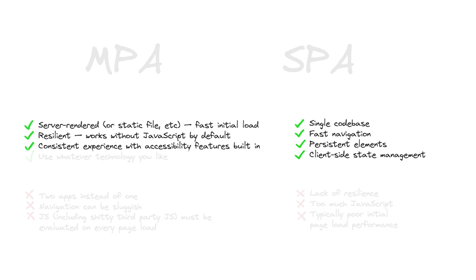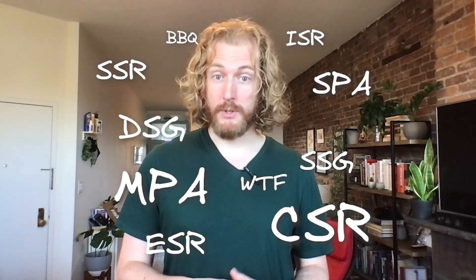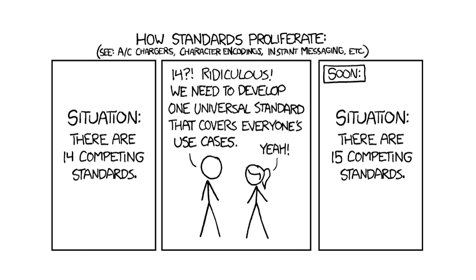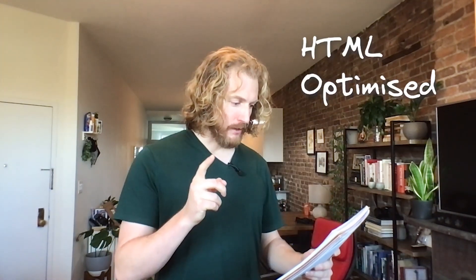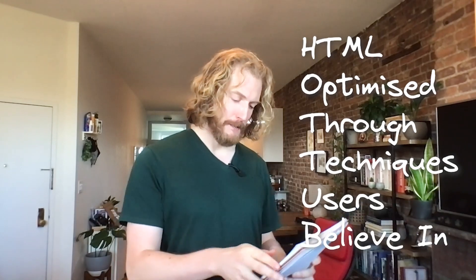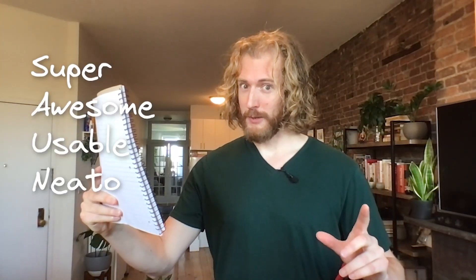So we can build apps that combine the best aspects of traditionalism and modernism — fast initial load, accessibility, resilience, instant navigation, a cohesive codebase, and capabilities that used to be out of reach. What should we call them? Well, we already have a sea of acronyms, so at the risk of being all XKCD 927, maybe there's a new acronym we could invent.